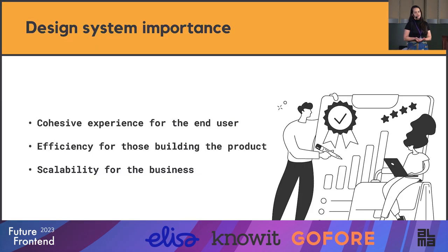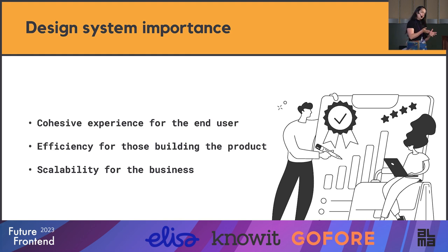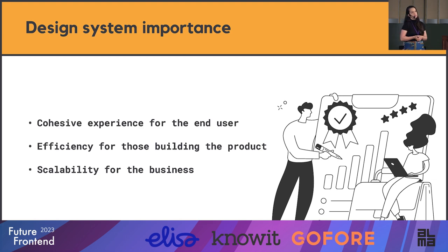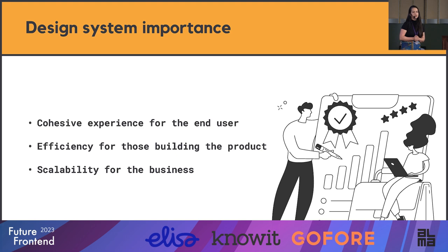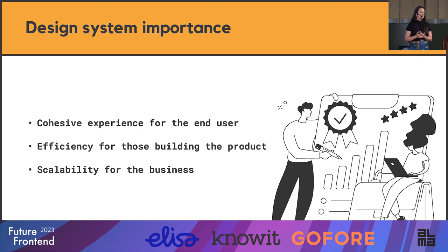We can never highlight the importance of design systems too much. In the end, it's a cohesive experience for the end user — that's what designers have in the back of their minds when thinking about user flows. It needs to go from what you experience on web into your iOS and Android applications. It's also very efficient to have a design system when building a project. For designers, it means libraries they can drag and drop elements to make wireframes and high-fidelity prototypes. The same for developers — you don't have to rewrite pieces of code that perform exactly the same across different flows. And ultimately, it's scalability for the business.